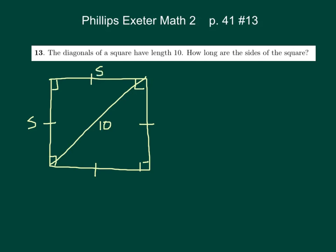and we can do S² + S² = 10². That would be 2S² = 100. Divide both sides by 2.